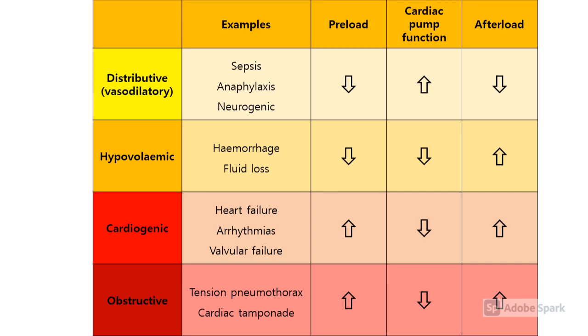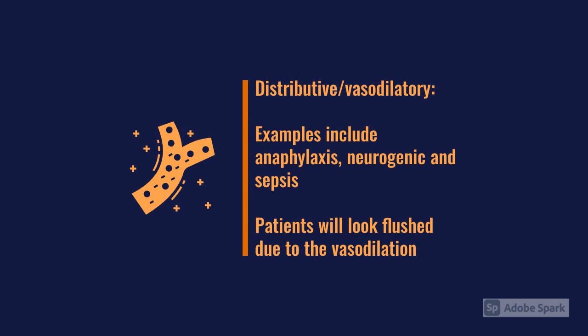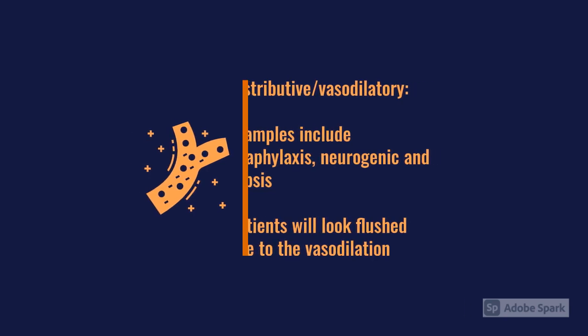Distributive shock has largely been renamed vasodilatory because it makes sense clinically. Big causes include anaphylaxis — where you get massive vasodilation from histamine release — neurogenic shock, where vasodilation occurs because the nerve supply is interrupted, and sepsis, where vasodilation results from the inflammatory response. All of these can cause the patient to appear flushed.